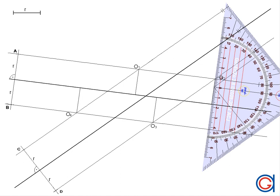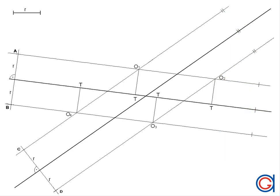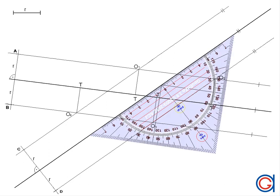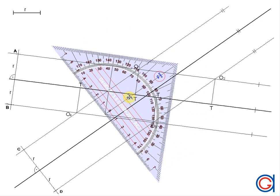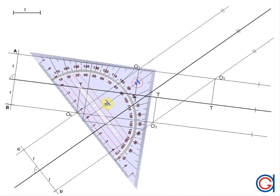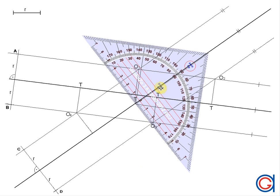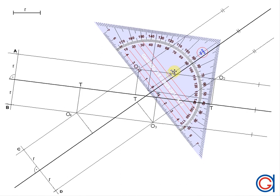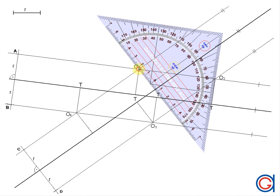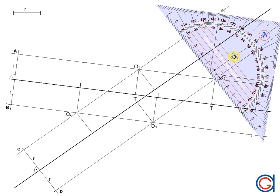Now we are going to get the second four tangent points by joining O1, O2, O3, and O4 — the center points — to the other intersecting line at 90 degrees, as can be seen here. So here we have tangent point five, and from O4 I get tangent point six, tangent point seven, and finally tangent point eight.